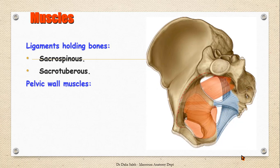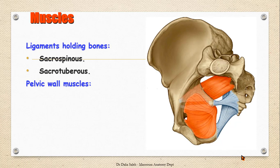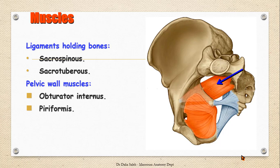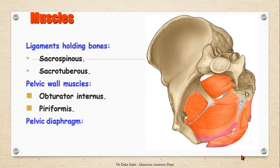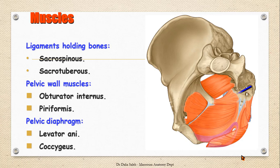Then we have the arrangement of the pelvic wall muscles. At the lateral wall of the pelvis, we have two muscles: the obturator internus, which covers the inner aspect of the obturator foramen, and the piriformis muscle, which we can see exiting the pelvis through the greater sciatic foramen. Then we have the floor of the pelvis, or the pelvic diaphragm, which is made by the large levator ani muscles, one on each side, along with the coccygeus muscles.